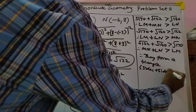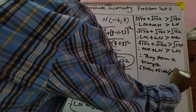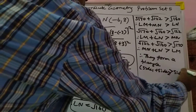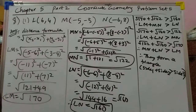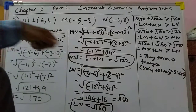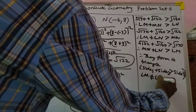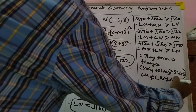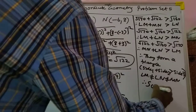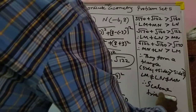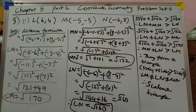Therefore they form a triangle because side 1 plus side 2 is greater than side 3. And LM is not equal to LN, which is not equal to MN, therefore it is a scalene triangle. I hope you got this.